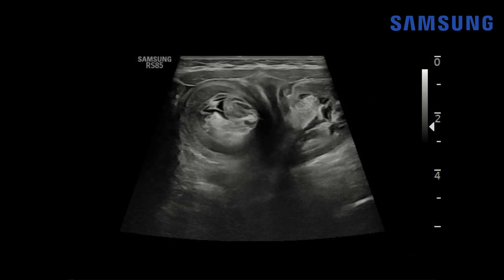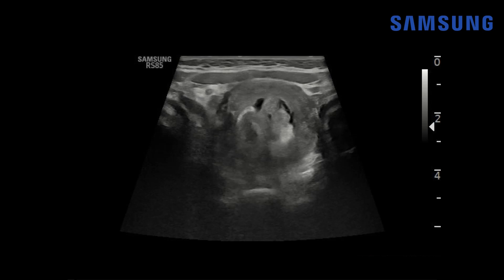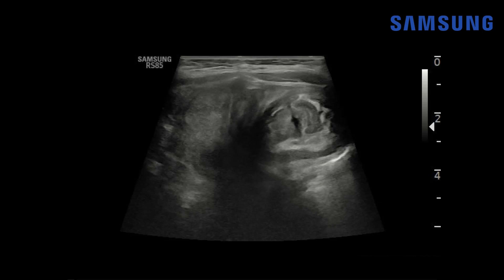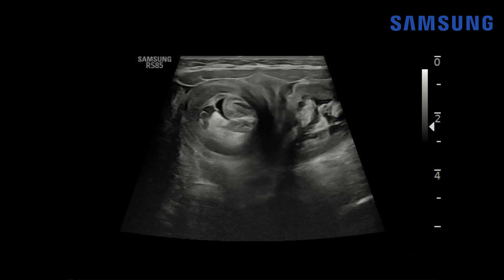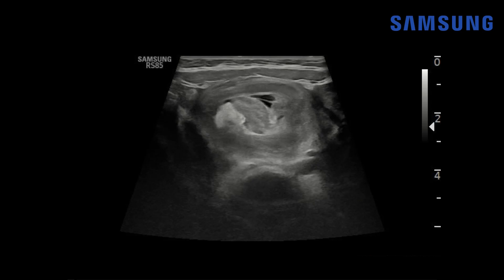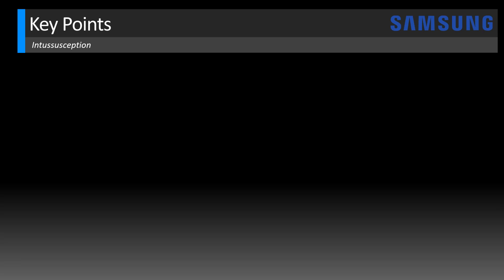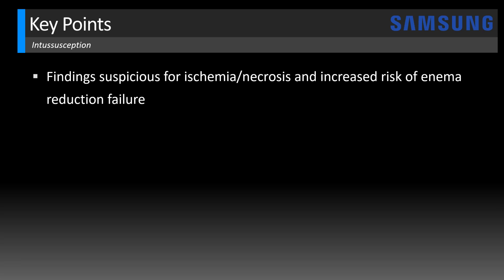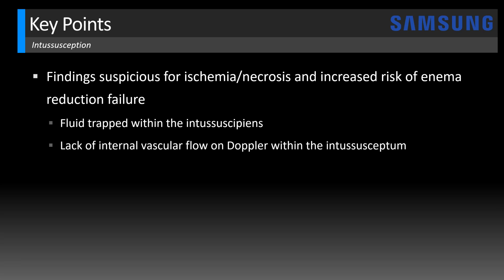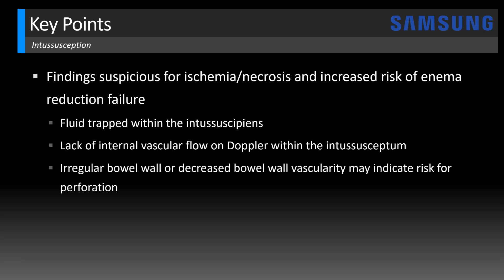On real-time imaging we see just how complex this intussusception is — the prolapsed loop is rather long with a tethered appearance. This was not able to be successfully reduced with air enema and went to surgery, where the bowel was found to be necrotic and needed to be resected. Findings that raise suspicion for ischemia or necrosis and increased risk of enema reduction failure include: fluid trapped within the intussuscipiens, lack of internal vascular flow on color Doppler within the intussusceptum, and irregular bowel wall or decreased vascularity indicating friability and increased perforation risk. If any of these findings are present, it's important to alert the team that surgery needs to be on standby.